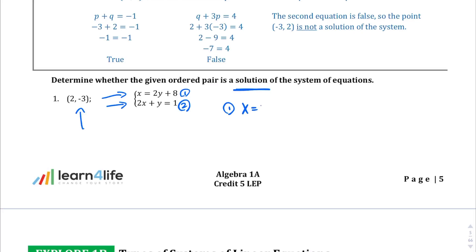So, let's do x = 2y + 8, and instead of the x, I'm going to put that 2 = 2(-3) + 8. 2 equals, what is this, -6 + 8, and yes, in fact, -6 + 8 equals 2, 2 = 2, therefore, this checks out, this is a true statement.